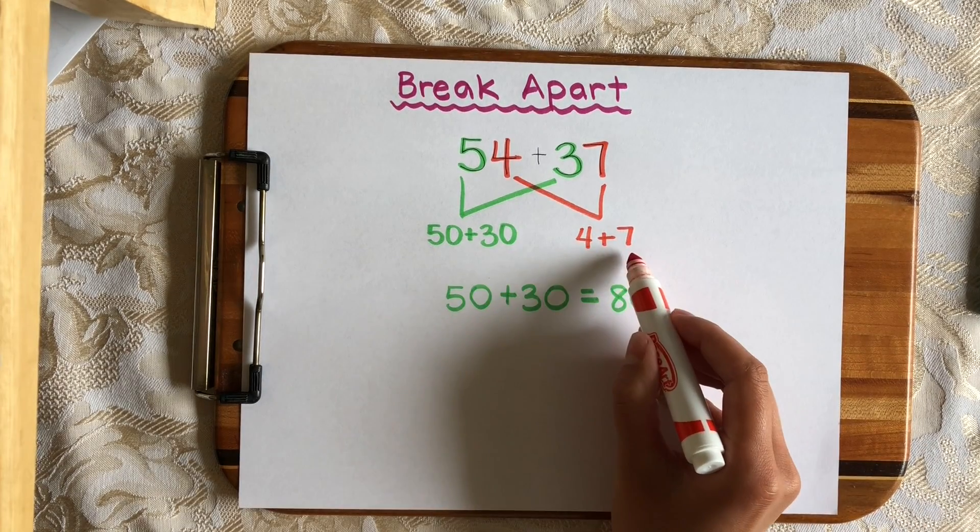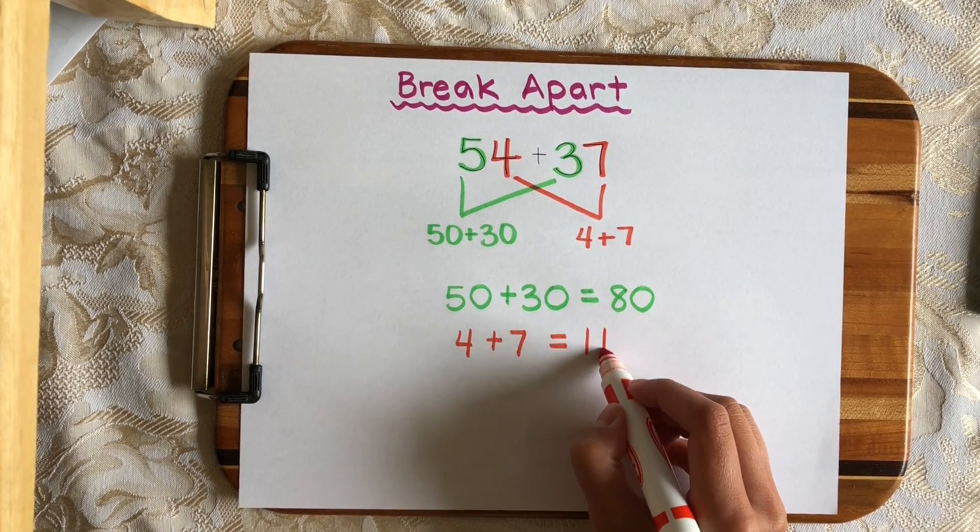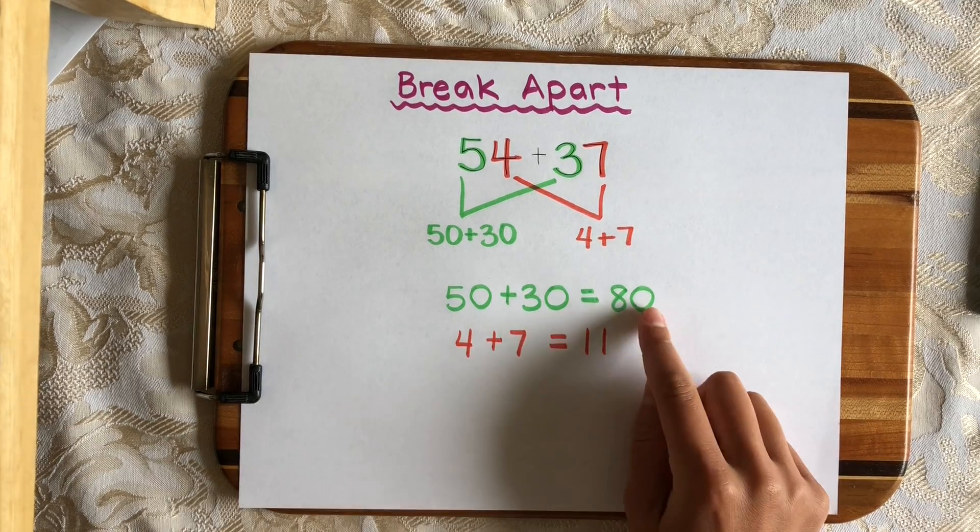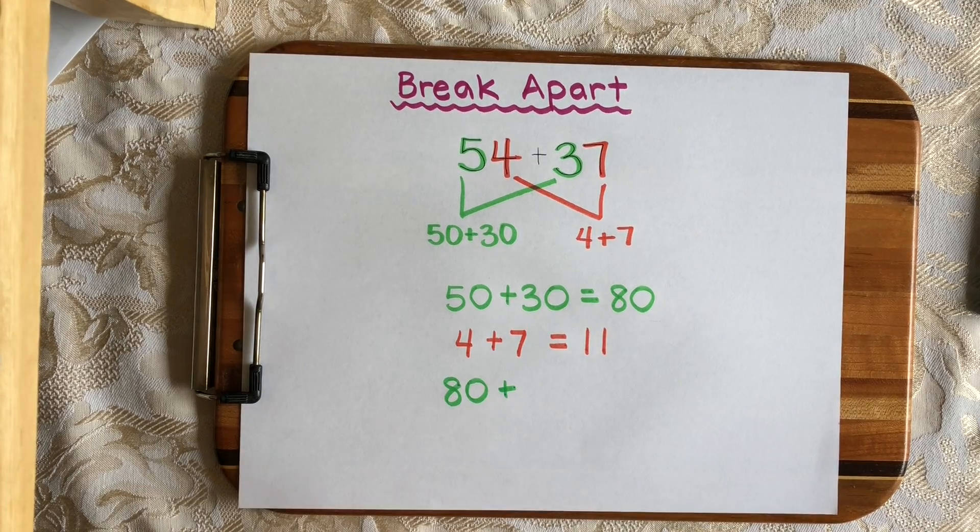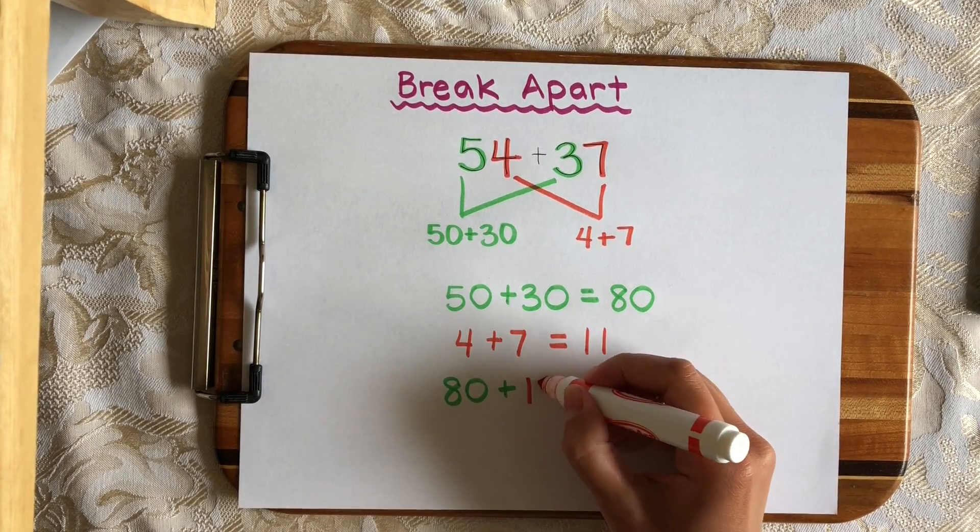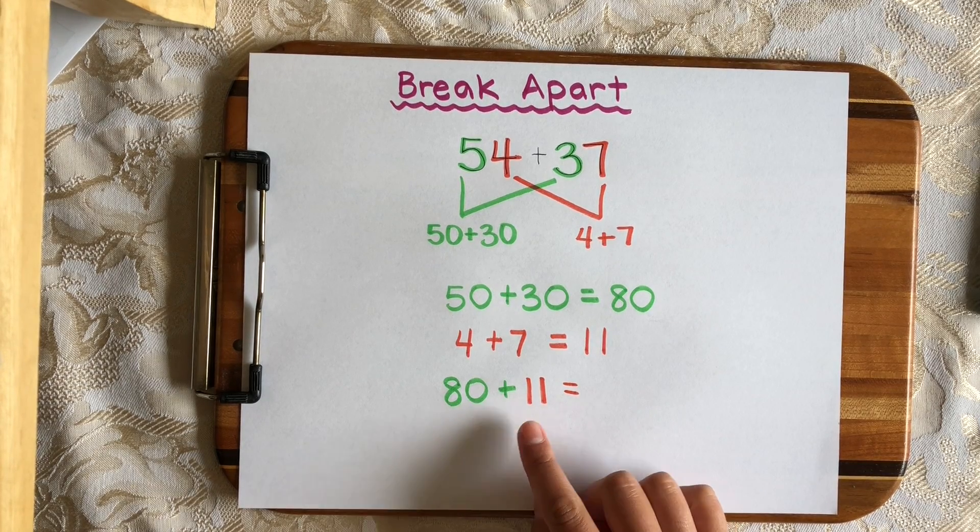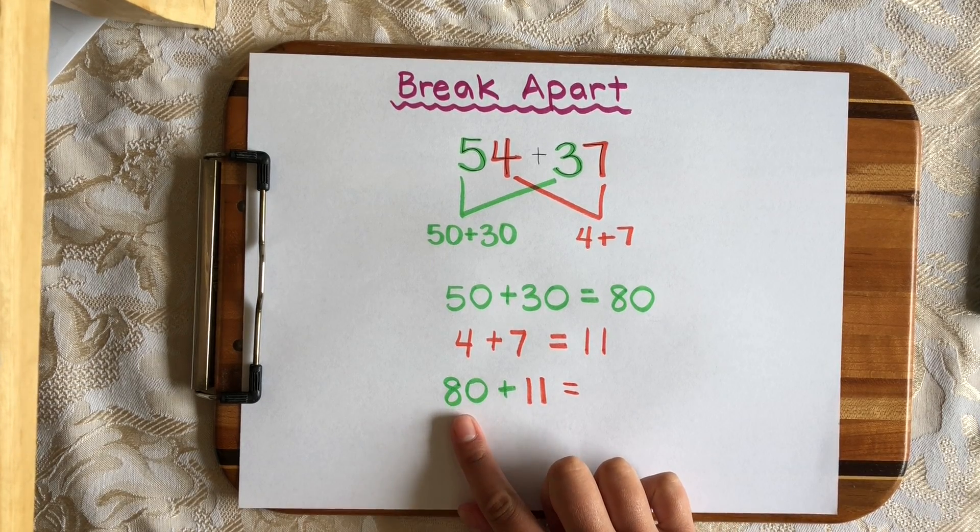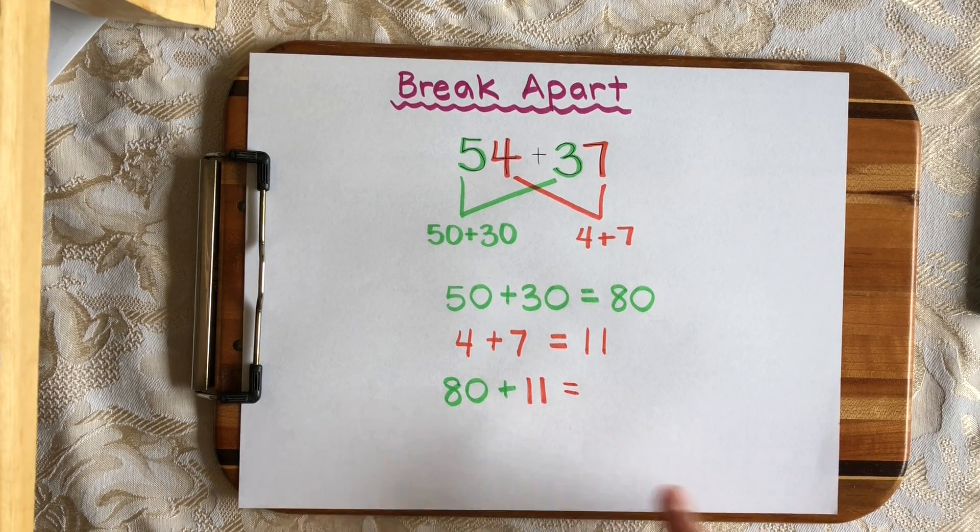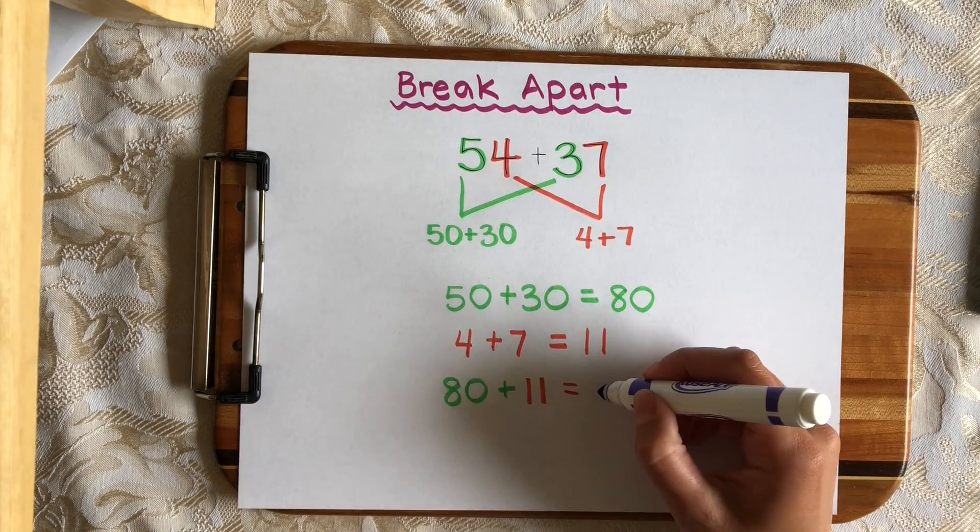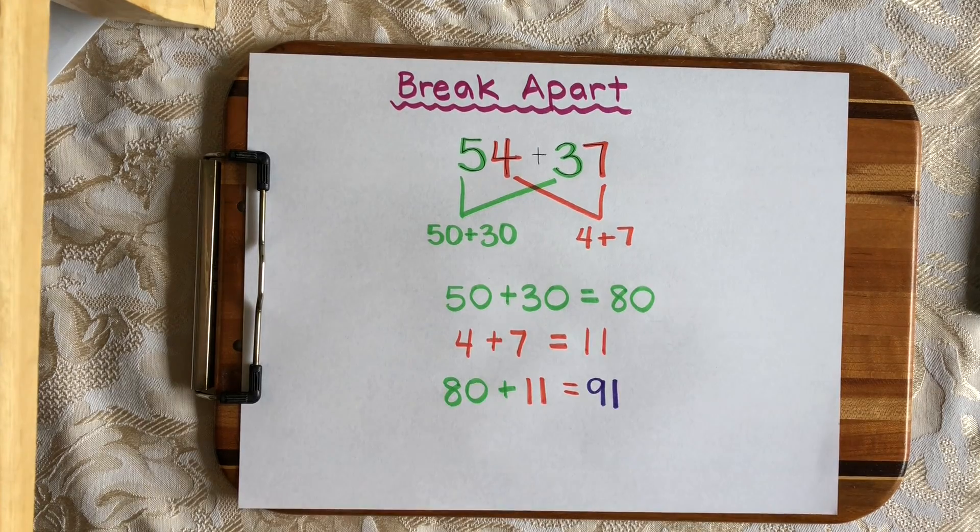Now I'm going to add the ones. 4 plus 7. I know that quickly, that's 11. And lastly, I need to bring together 80 plus 11 to get my final sum. And I know that 11 is made up of a 10 and a 1. So if I think in my head 80 plus 10 plus 1, I will get to 80 plus 10 equals 90, plus 1 more equals 91. Which means the sum of 54 plus 37 is 91.